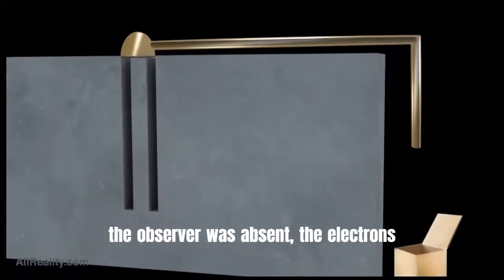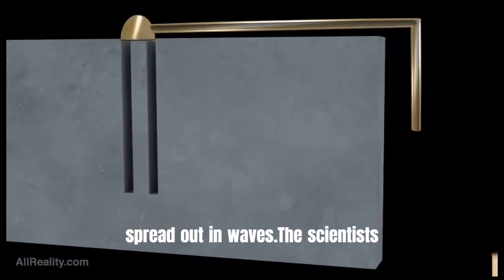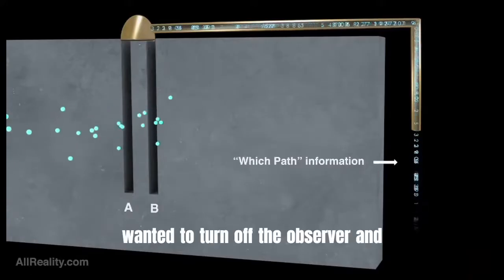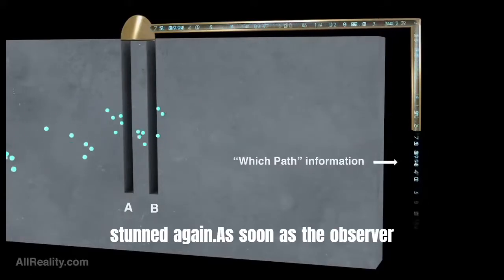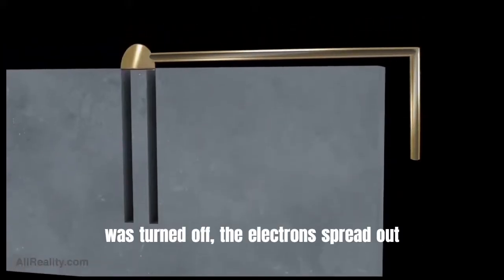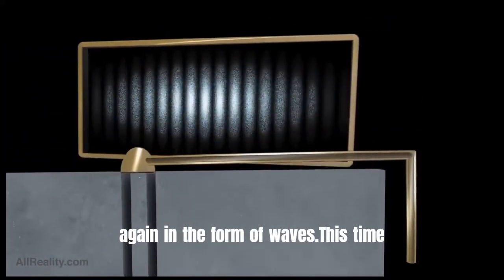However, when the observer was absent, the electrons spread out in waves. The scientists wanted to turn off the observer and repeat the experiment. And everyone was stunned again. As soon as the observer was turned off, the electrons spread out again in the form of waves.